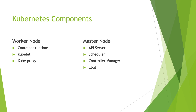etcd, also known as the cluster brain, stores cluster changes in a key-value store. It is a distributed storage system based on the Raft algorithm and holds the current status of any Kubernetes component.